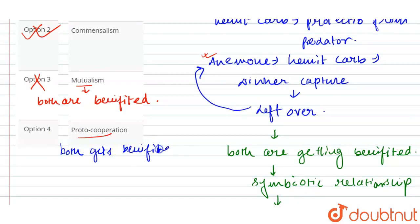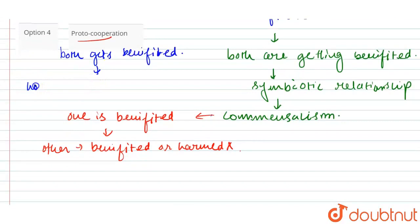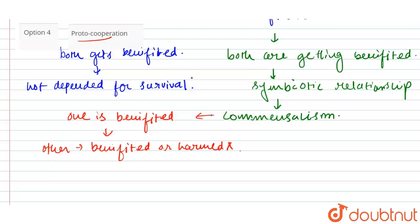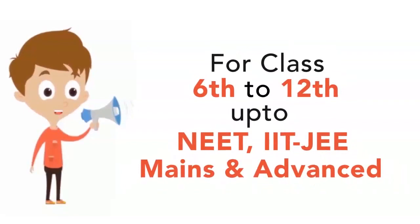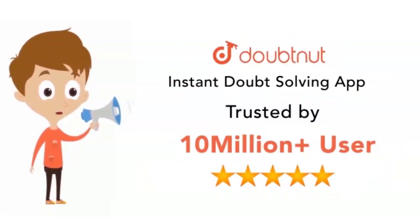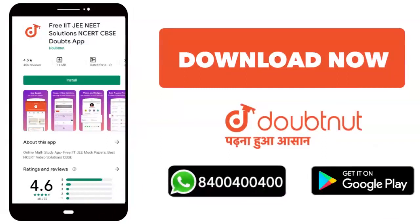Both are upokrito (benefited) but both can survive — not dependent on each other for survival. The sea anemone interacts but can survive without the relationship — so that is not our exact answer. So what will our correct answer be? The answer option — for this question, listen carefully and WhatsApp us.